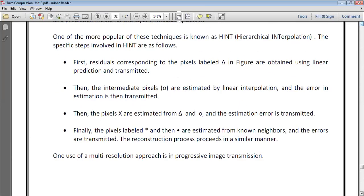First step is residuals corresponding to the pixels labeled with triangles in the figure are obtained using linear prediction and transmitted. After that, the intermediate pixels that are represented by circles are estimated by linear interpolation, and the error in the estimation is then transmitted.